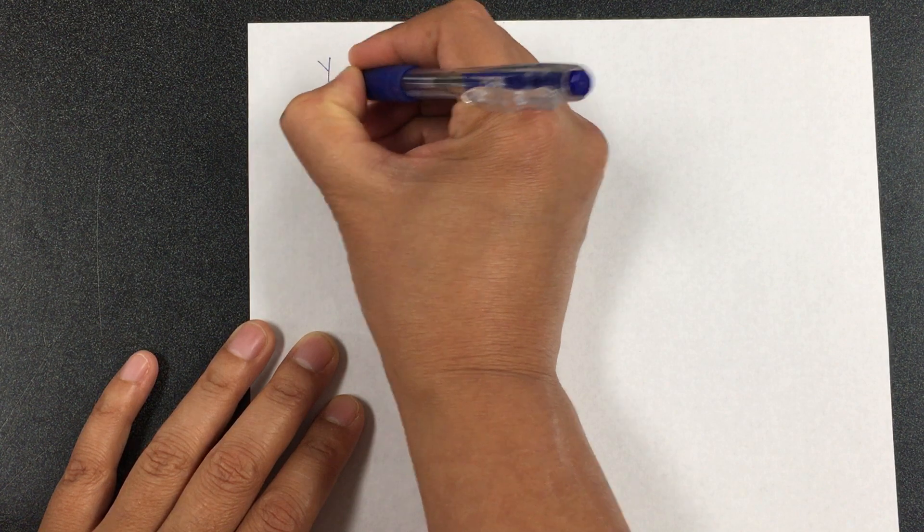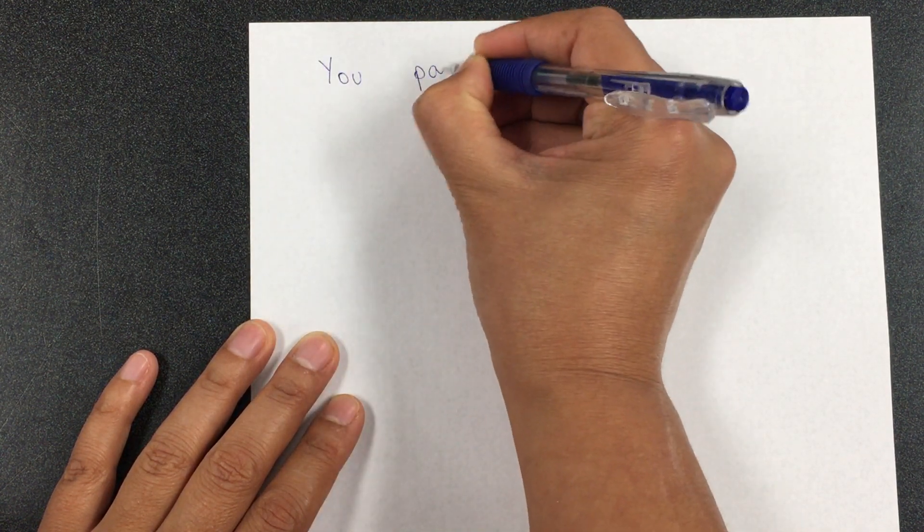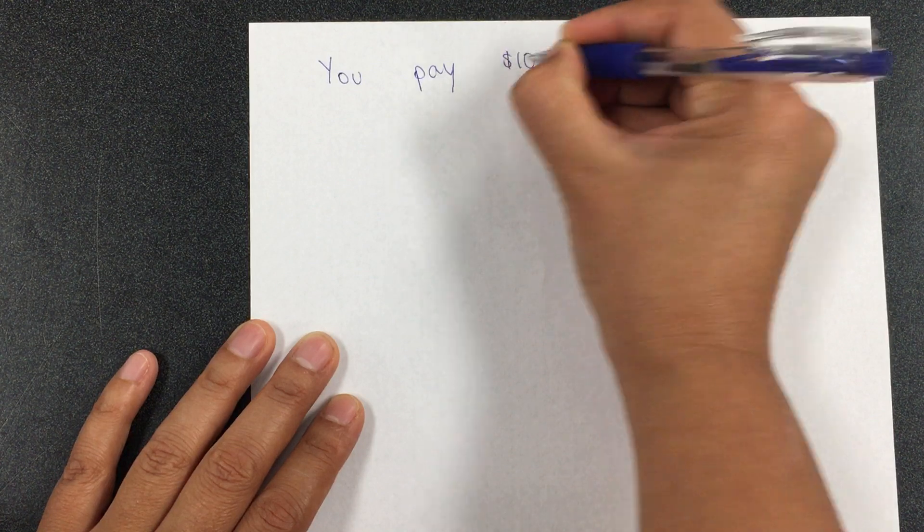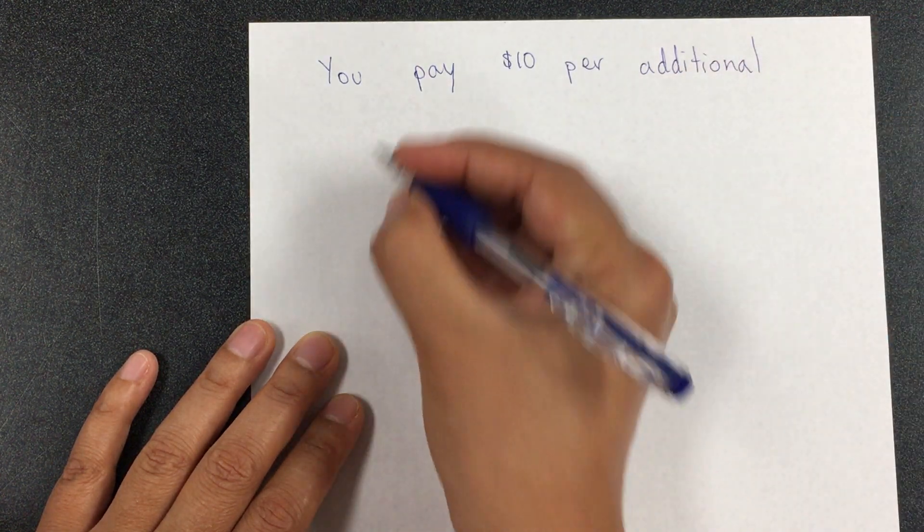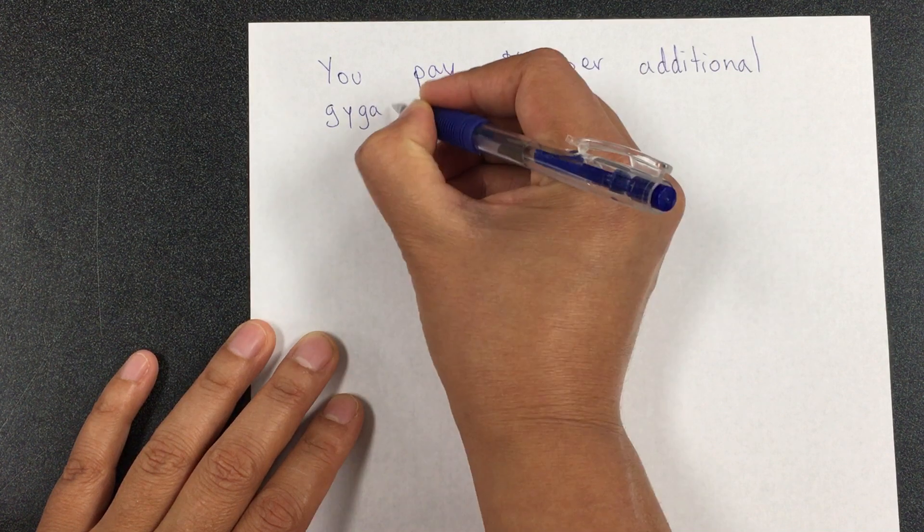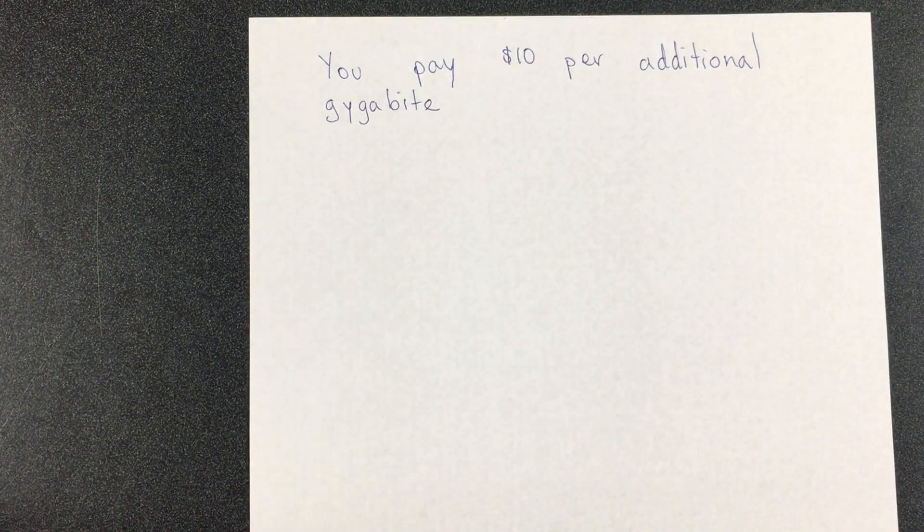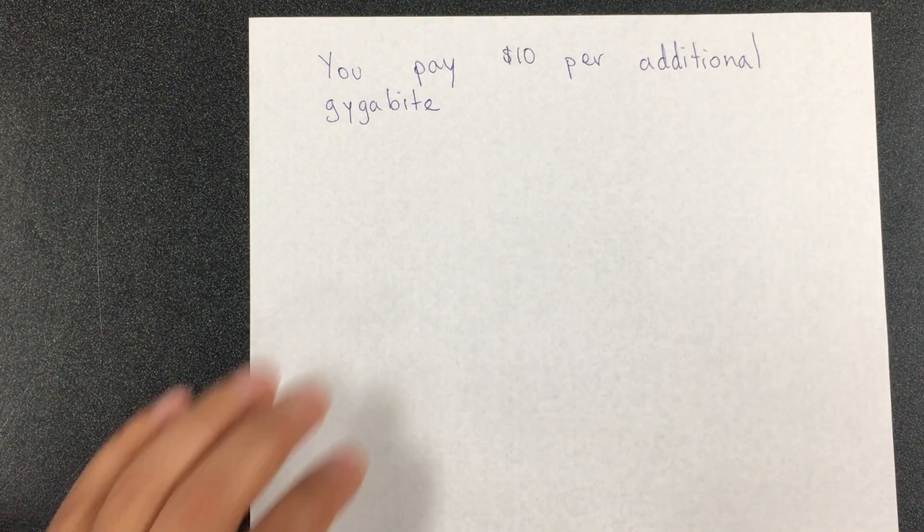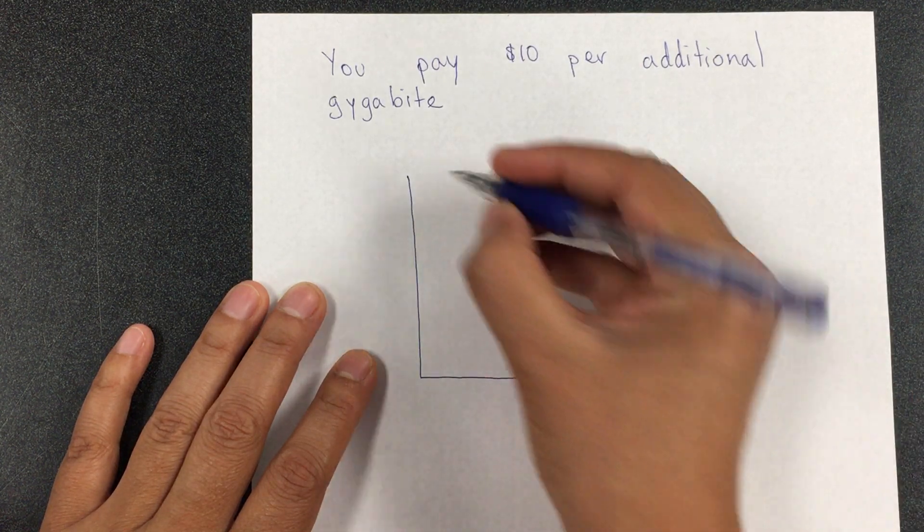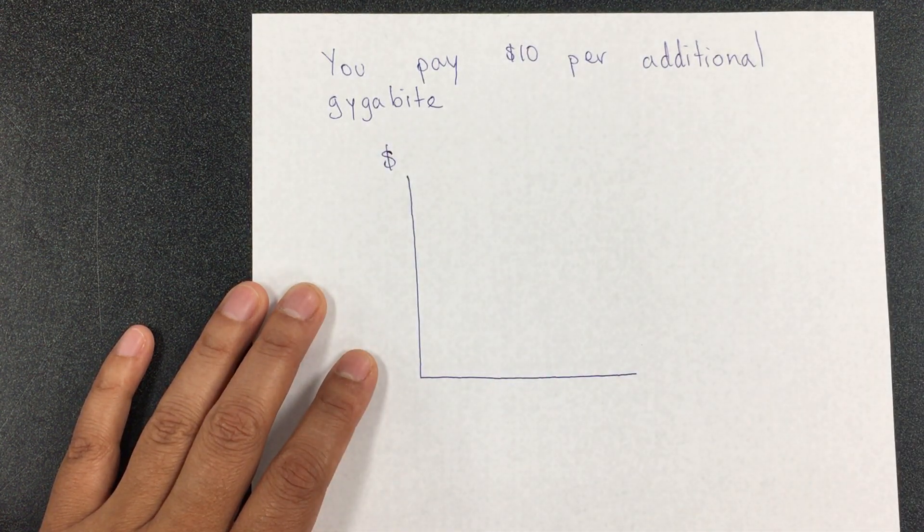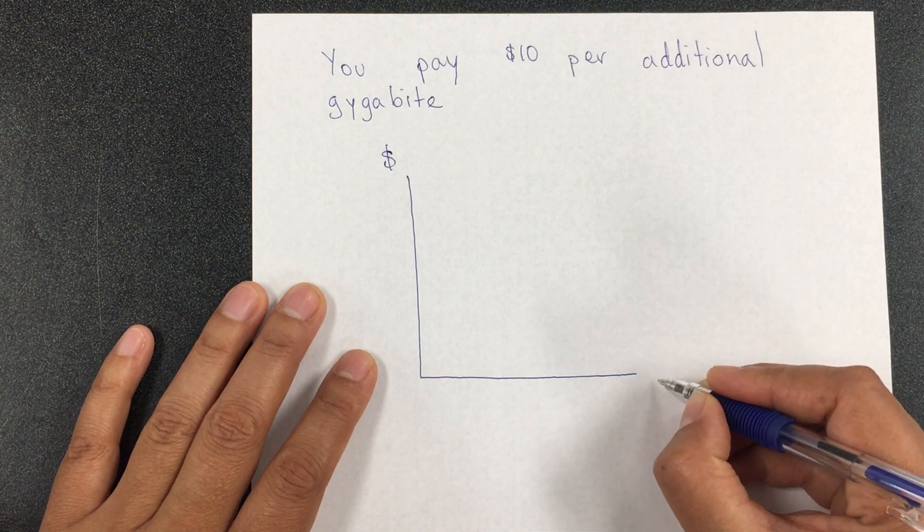The next one is called the step graph, and this one is very interesting. I didn't think about it until I looked at the graph, but it says you pay $10 per additional gigabyte. How would that graph look like?